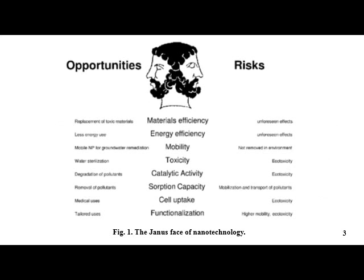As the picture shows, nanotechnology has a generous face with two sides: one showing advantages and opportunities, and the other showing risks and disadvantages. The first point is material efficiency, which includes the replacement of toxic materials from processes. When we remove toxic material from a process, it can show unseen effects.